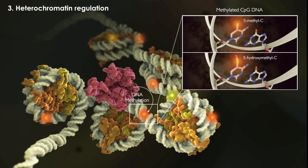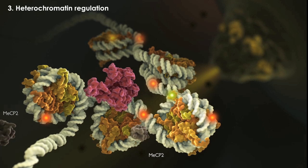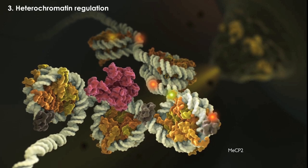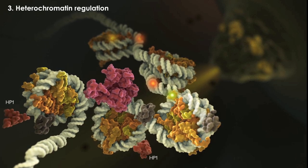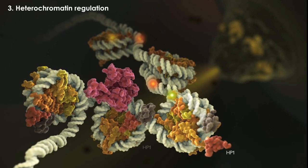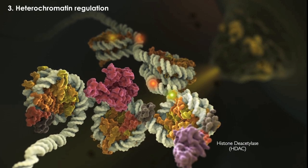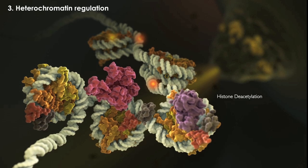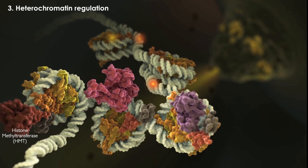Methylation of cytosine bases in regions called CpG islands is a hallmark of transcriptionally repressed heterochromatin. These methylated cytosines in turn recruit proteins like MECP2, methyl-CpG binding protein 2, and HP1, heterochromatin protein 1. These proteins are thought to maintain a repressive state of chromatin by inducing histone deacetylation by HDACs, as well as histone tail methylation by histone methyltransferase enzymes.